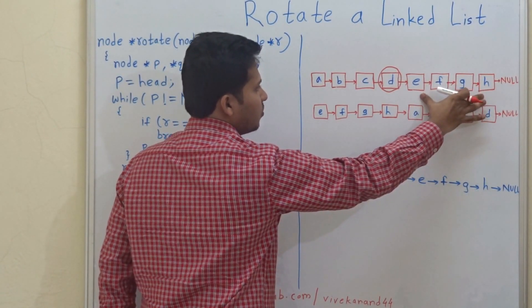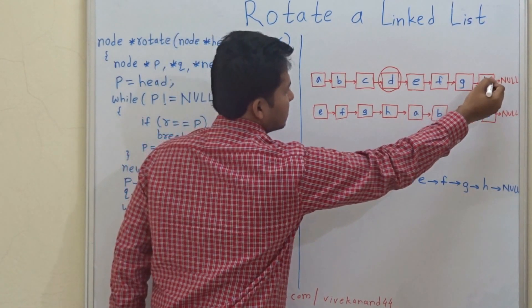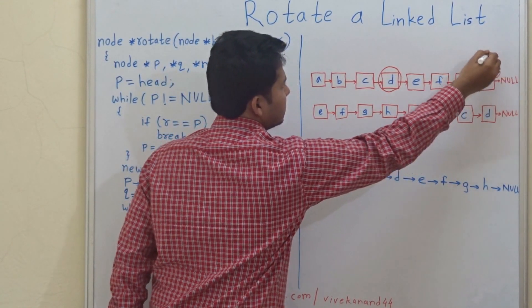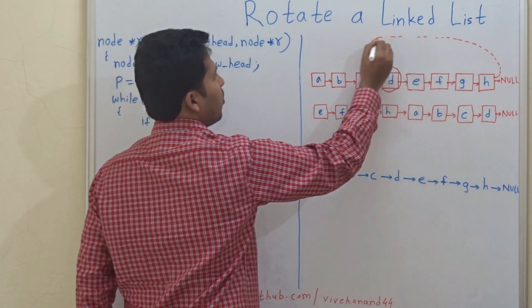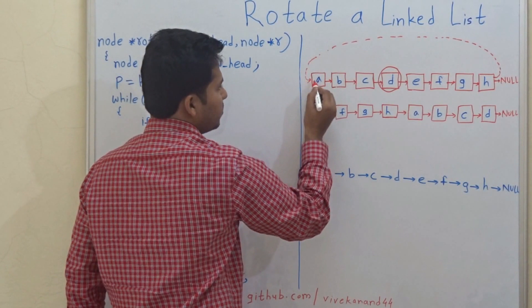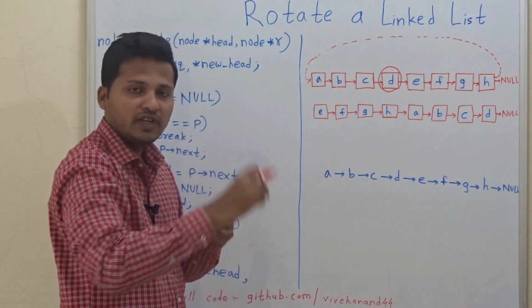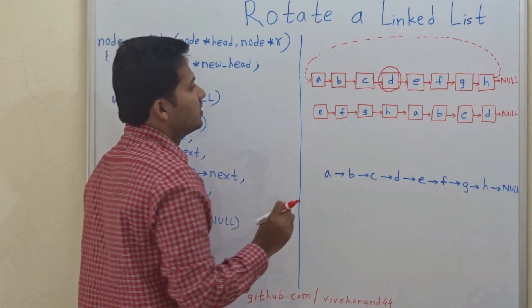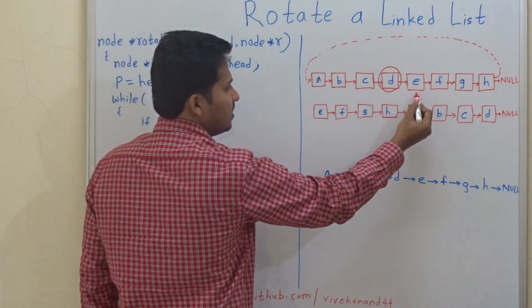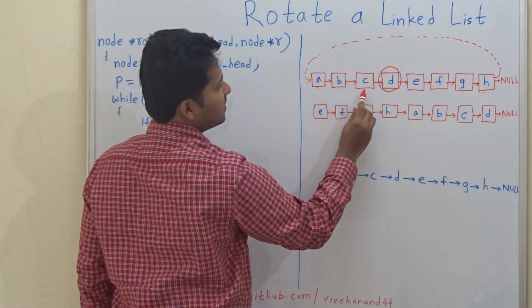so these nodes will go to the beginning and the last node of this linked list will point to the starting node, which is why this is called rotating the linked list. So the answer will be E, F, G, H and A, B, C, D.